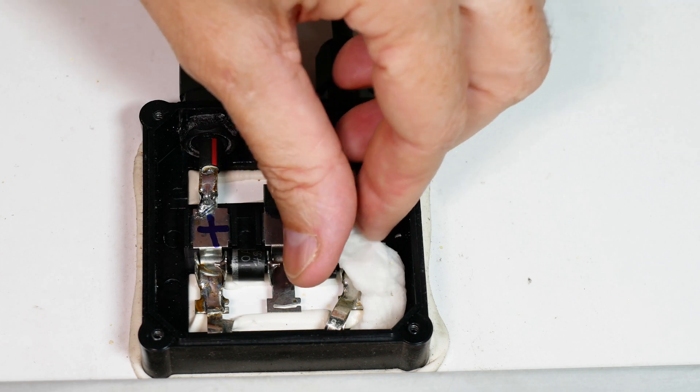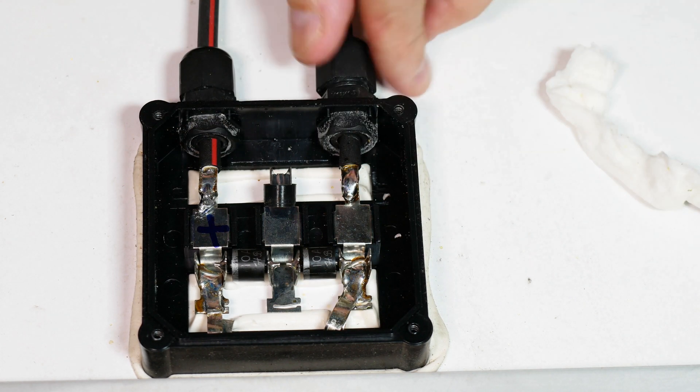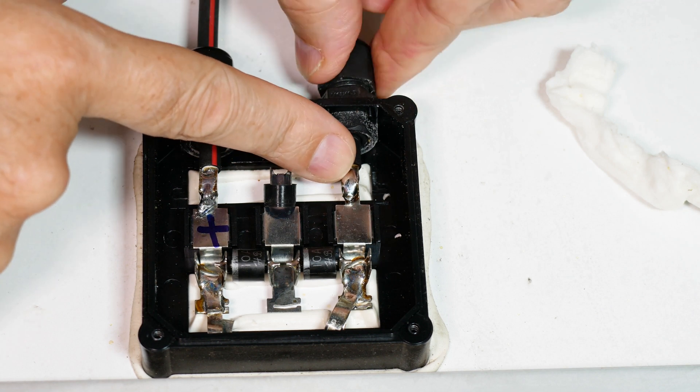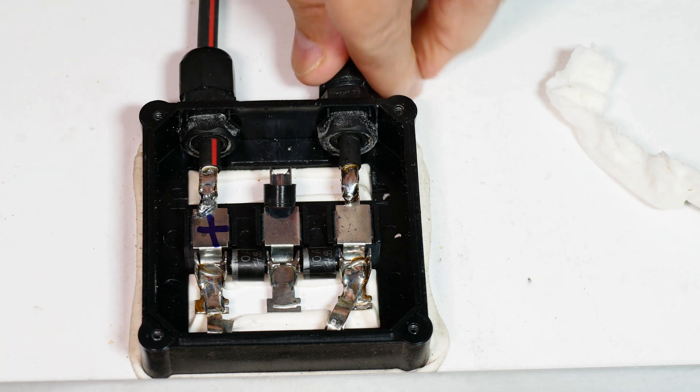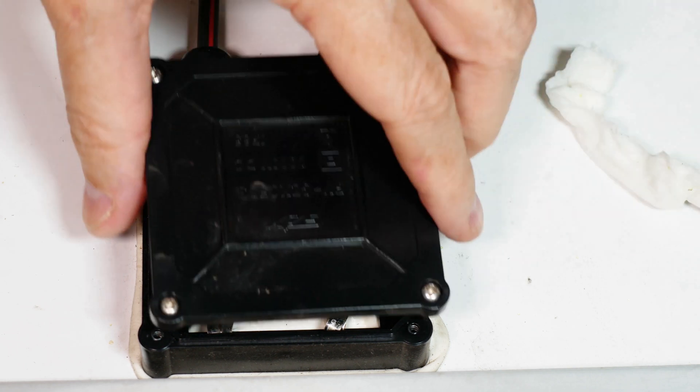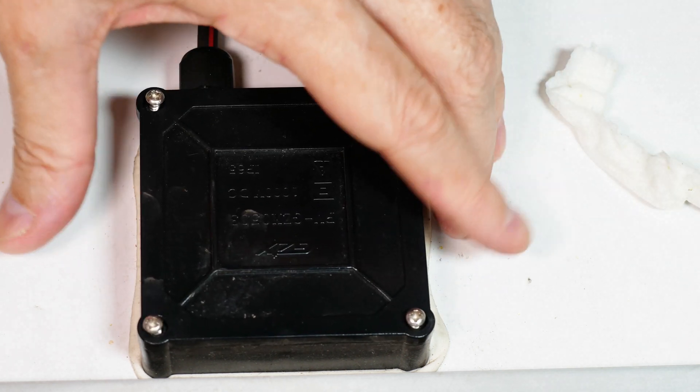And the last step is to, of course, remove any protective tissue you have. Tighten down this nut. Make sure you've inspected your solder joint before you close things up. And the last thing is we'll put on this cap and screw it down.